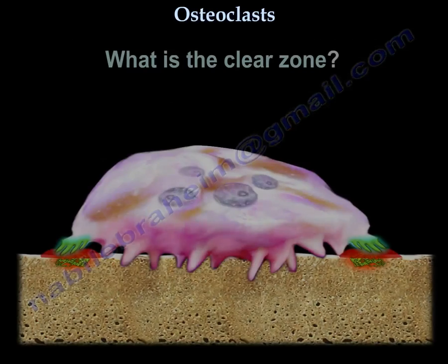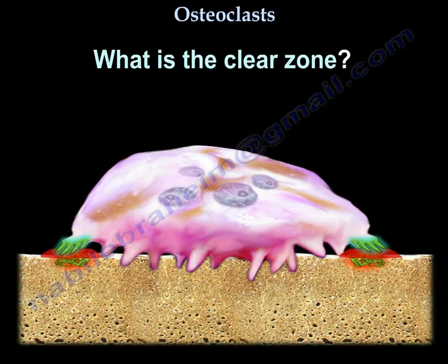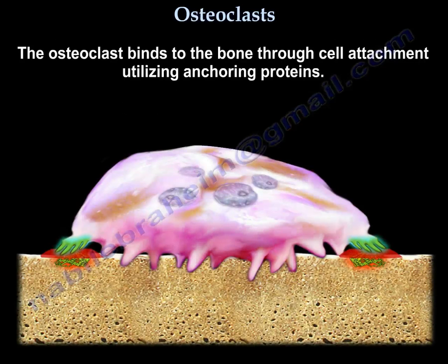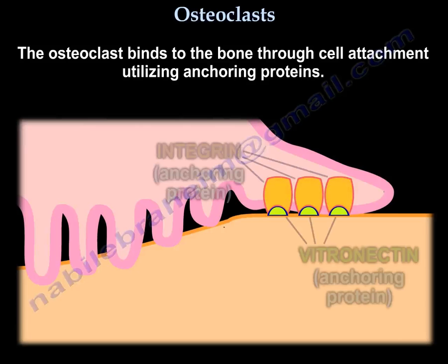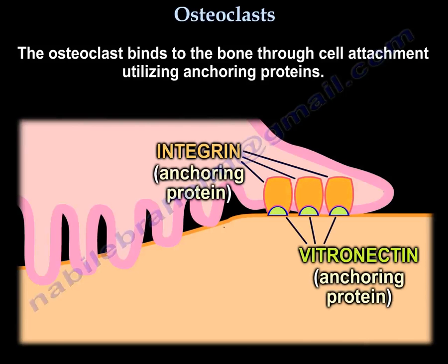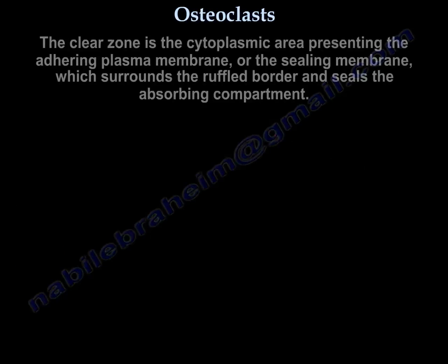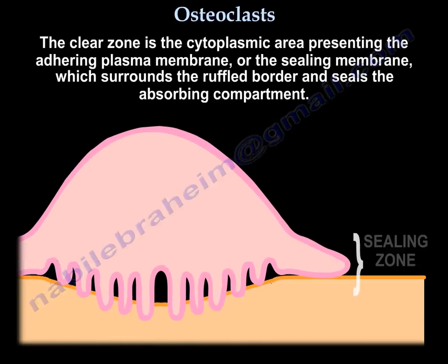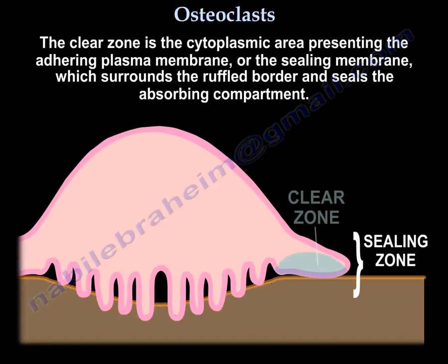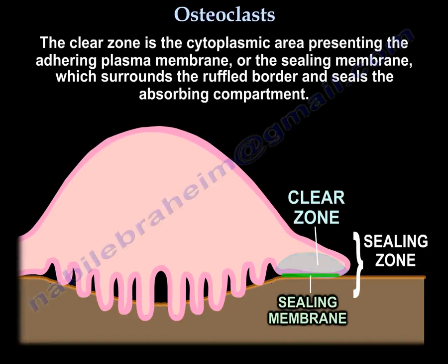The clear zone is defined as the osteoclast binding to the bone surface through cell attachment utilizing anchoring proteins. It is a cytoplasmic area presenting the adhering plasma membrane, or sealing membrane, which surrounds the ruffled border and seals the absorbing compartment.